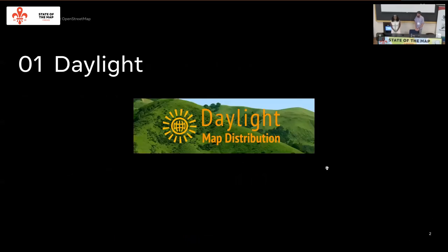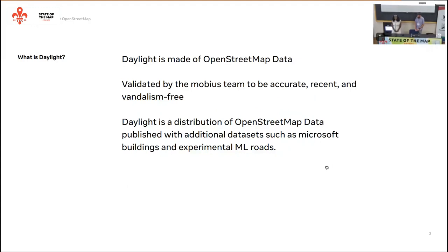So the first question: what is Daylight? Daylight is a geospatial data set made of OpenStreetMap data. This data is validated by our Mobius team to be accurate, recent, and vandalism-free. Daylight is also published alongside other data sets such as Microsoft Buildings and experimental ML Roads.